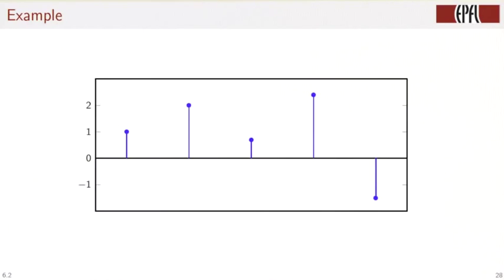So here is an example. We have five blue samples indicated by the sticks. They are equally spaced in time, and we fit the red curve smoothly through the samples. Note that it is exact at the sample values and smooth in between.